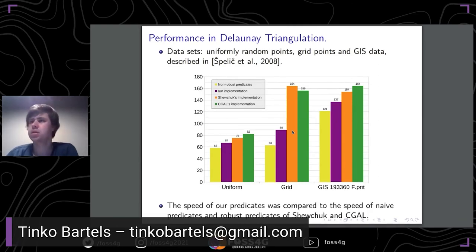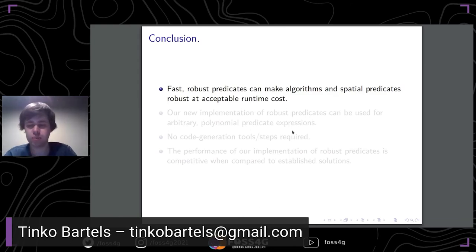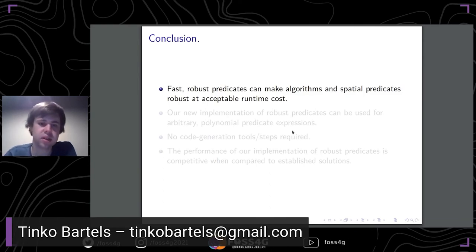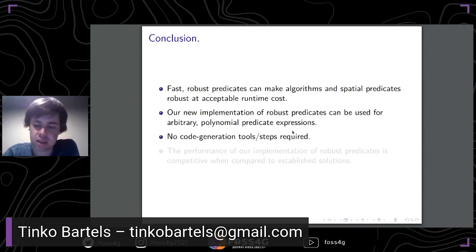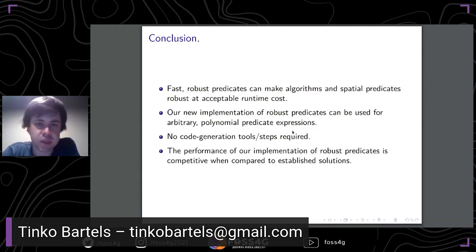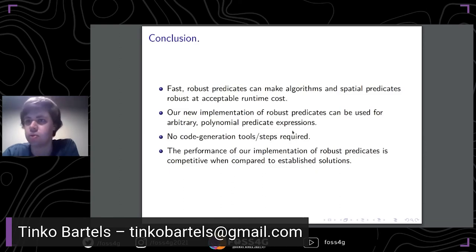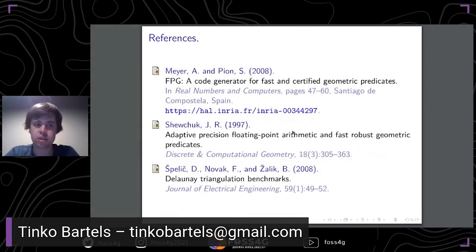In conclusion, fast robust predicates can help to make geometric algorithms and spatial predicates robust, and they only add acceptable overhead. Our new implementation can be used for arbitrary polynomial predicate expressions, and it is a simple header-only library — no code generation is required and no additional build steps. The performance of our predicates was found to be competitive to existing solutions for robust predicates. These are the references used in the presentation, and there are further references in the full paper.